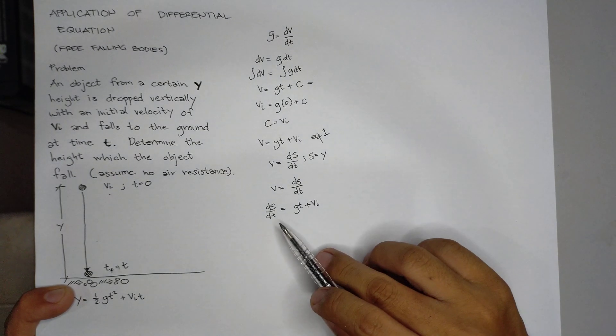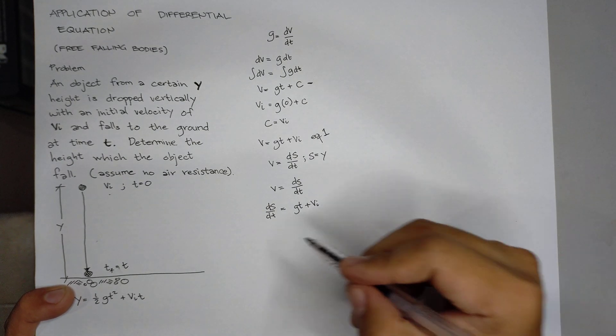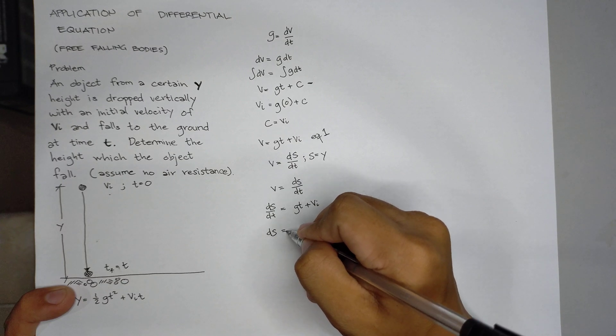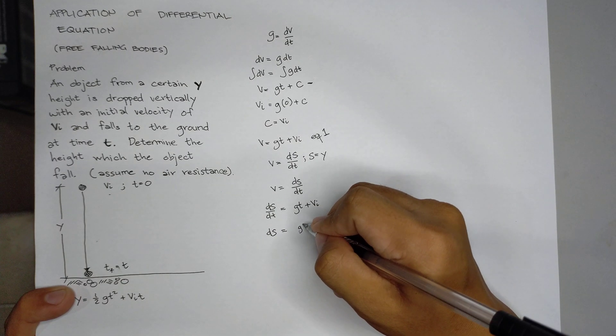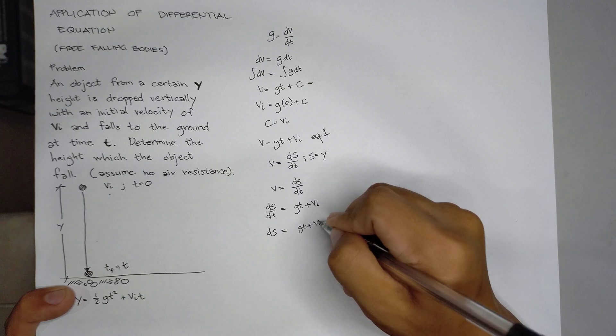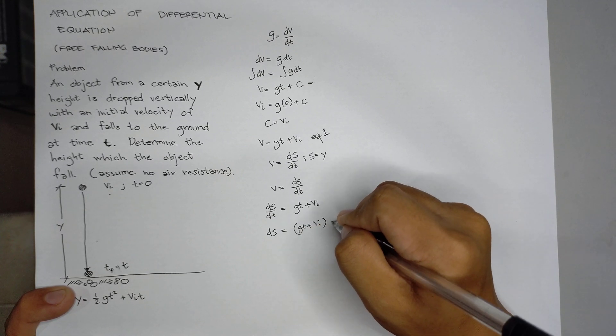From there, we also cross-multiply dt. So this becomes ds equals to g t plus vi times dt. Then we integrate.